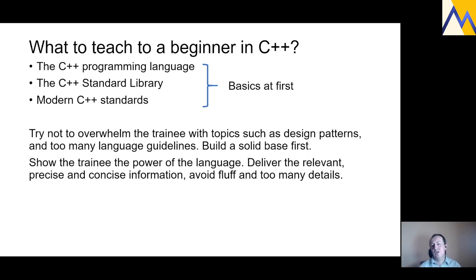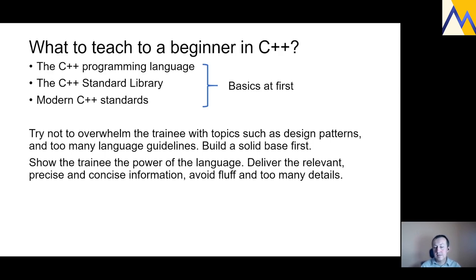Try not to overwhelm the trainee with topics at the beginning — we're discussing only starting with C++. Topics such as design patterns and too many language guidelines should come later. Build a solid base first. Explain the beauty and elegance of the language: the more elegant the code we write, the less assembly code is generated, resulting in a smaller and more efficient binary. Try to be concise, deliver precise information, and avoid fluff and too many details.